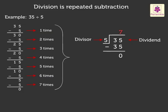Number 7 is the quotient, the answer that we get on dividing the numbers. And number 0 is the remainder, the number that remains after dividing.